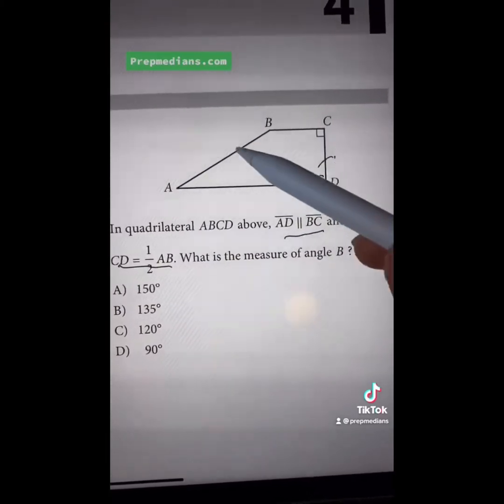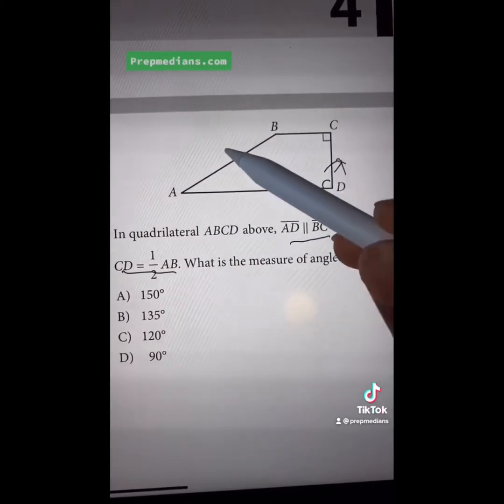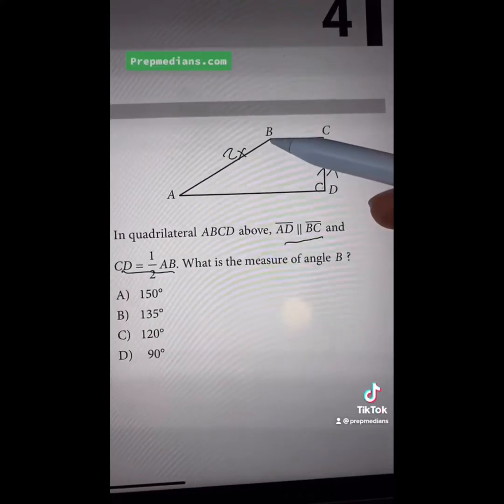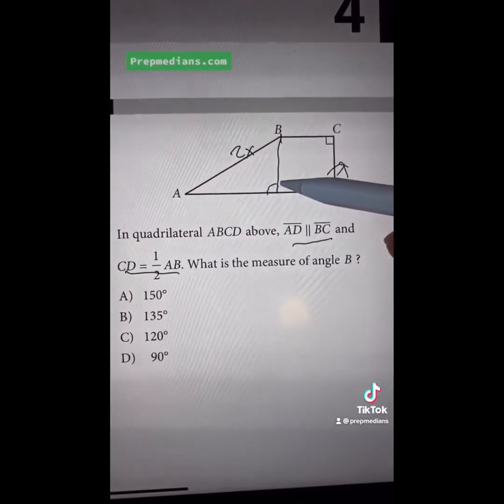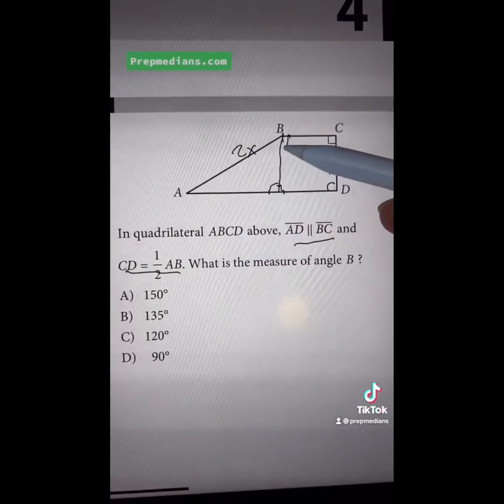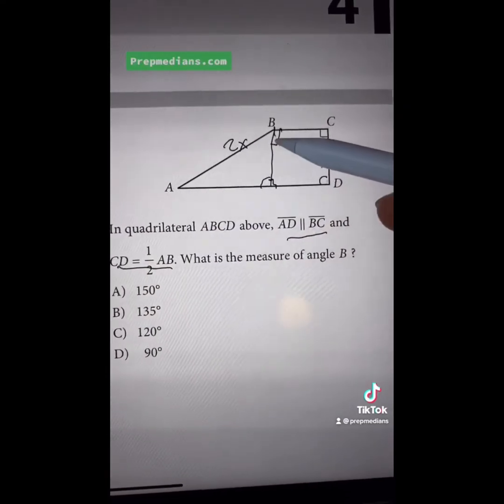And we know that this is half, call that X, of this, 2X. What we should do is go ahead and break this into a square and a right triangle. This is a right angle, this is a right angle, this is a right angle because this is a square.